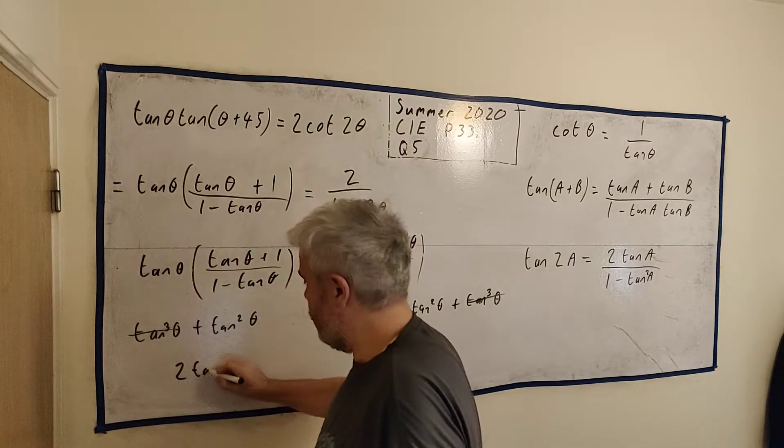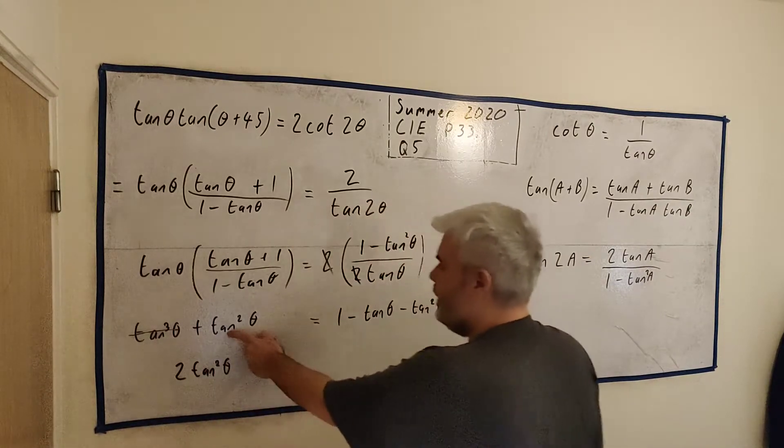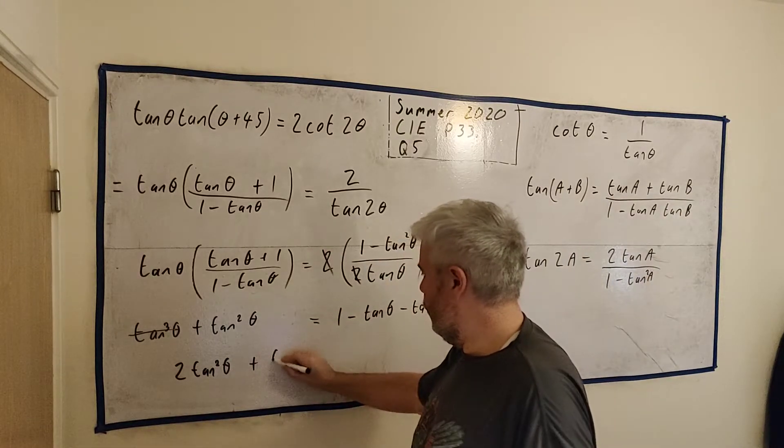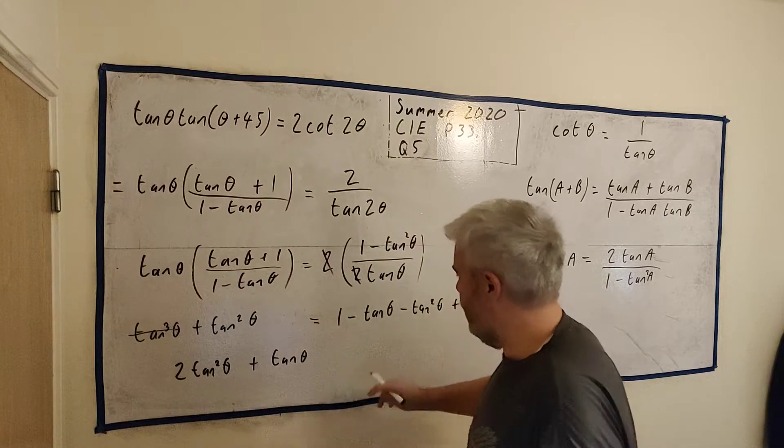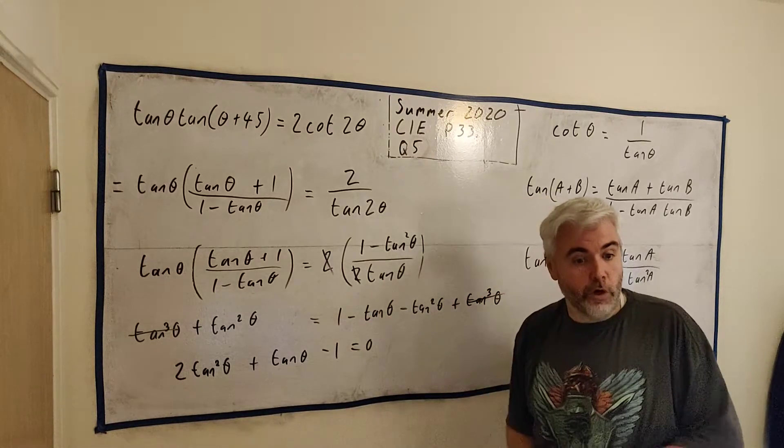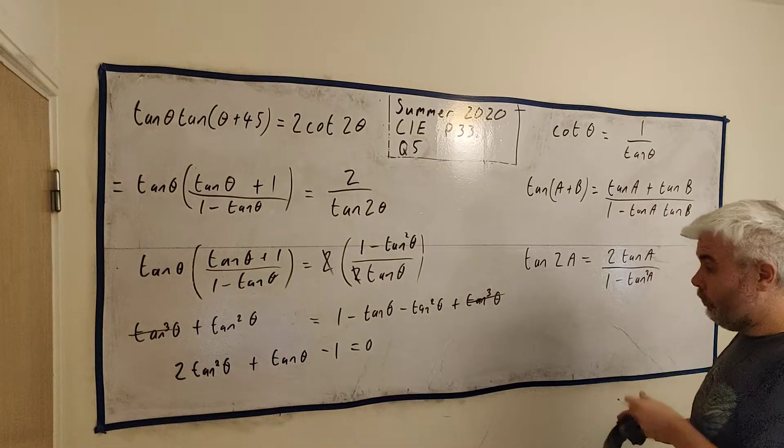now look what happens the tan³ cancel with the tan³ let's get all our tan² on one side we get two tan² θ this one plus this one let's get this one this side as well we get plus tan θ and we move the one over we have minus one equals zero that's our quadratic